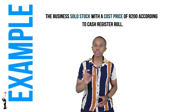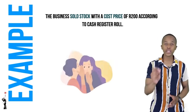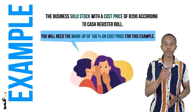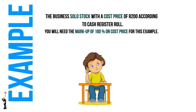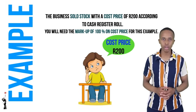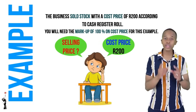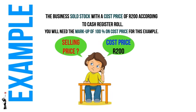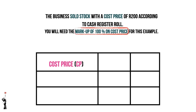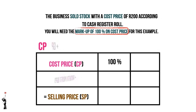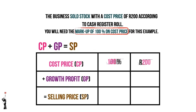Let's do one last example: the business sold stock with a cost price of 200 rand according to the cash register roll, with a markup of 100% on cost price. We're given the cost price but we need the selling price for the accounting equation. The cost price is always 100%. Using the formula: cost price plus gross profit equals selling price — that is 100% plus 100% equals 200%. Divide: 200 divided by 100 multiplied by 200 rand equals 400 rand selling price.